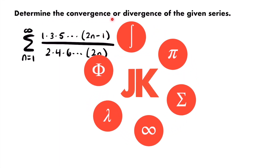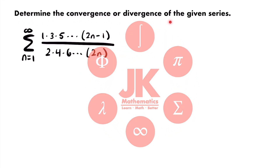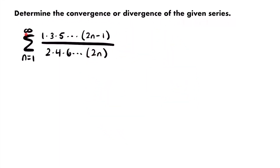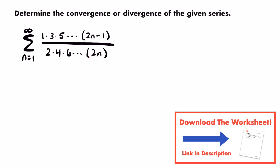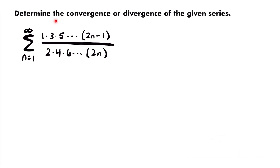We want to determine the convergence or divergence of the given series: the sum from n equals 1 to infinity of 1 times 3 times 5, multiplied up until 2n minus 1, divided by 2 times 4 times 6, multiplied up until 2 times n. This looks like a pretty complex series, but we will be able to determine if it converges or diverges. Before we start using any convergence tests, let's briefly explain what's happening in this series.